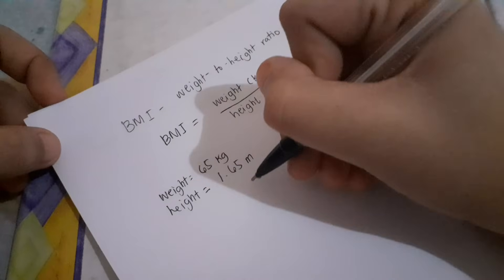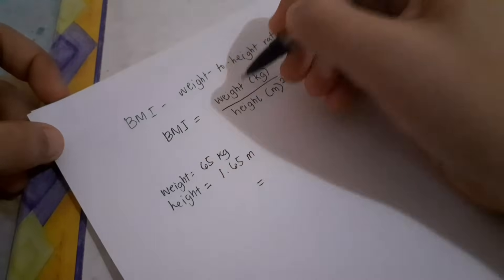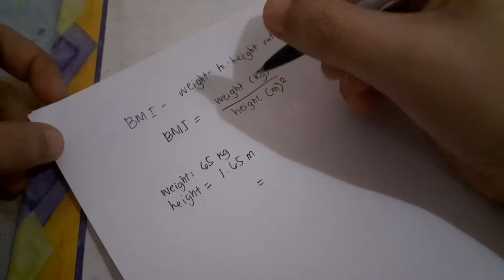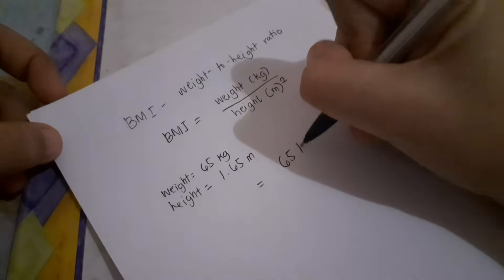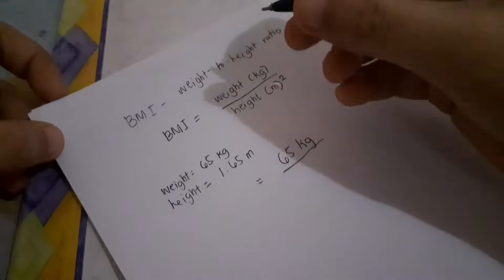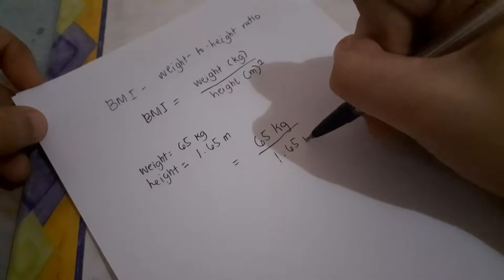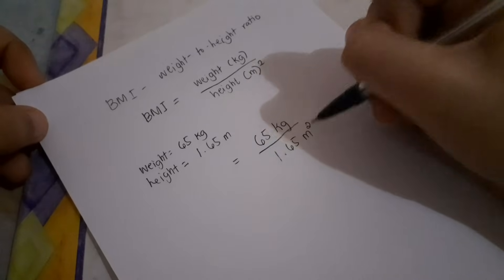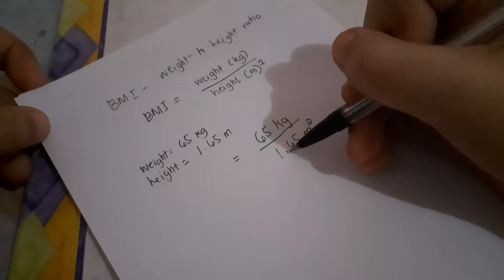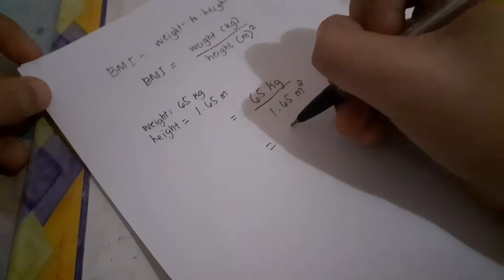So ilagay mo lang yung mga values mo dito sa formula. So weight is 65 kilograms and height is 1.65 meters, pero square mo yan. So square mo muna ito 1.65.